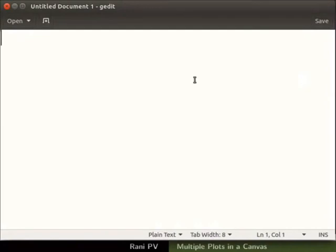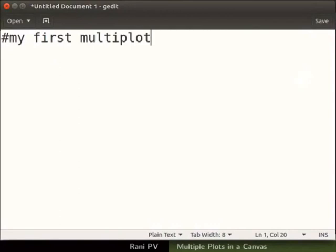We will write the required commands in a text file. I will type hash my first multiplot and press enter. This is a comment line. Next set the environment to multiplot mode as set space multiplot. Start a new line and leave a blank line for clarity.